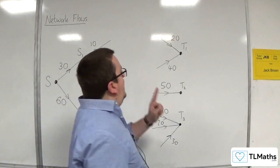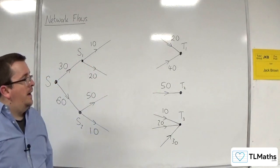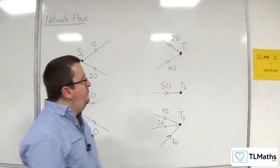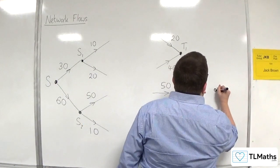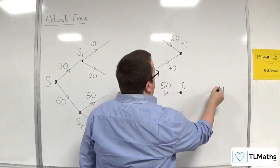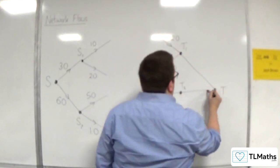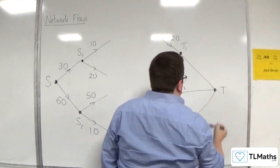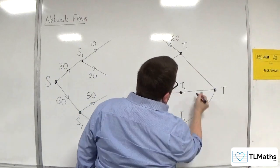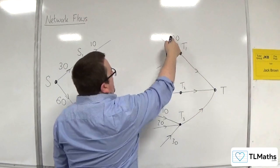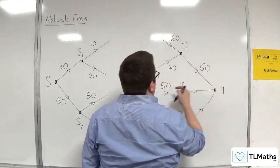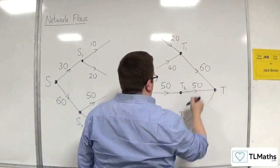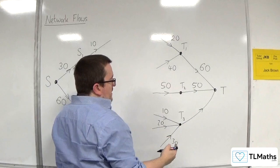Then over here, we've got 3 sinks. And so I'm going to put in a super sink, capital T. It's going to link up those 3. And in the same way, 20 plus 40 is 60. 50. 10 plus 20 plus 30 is 60.